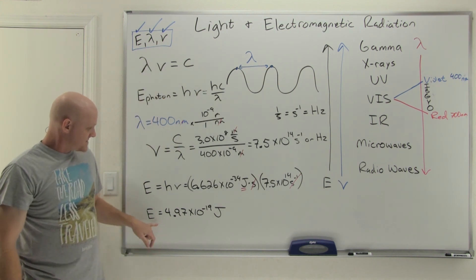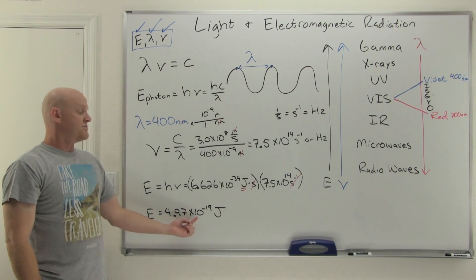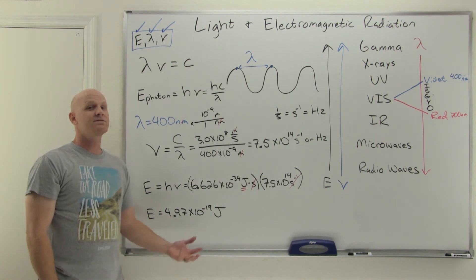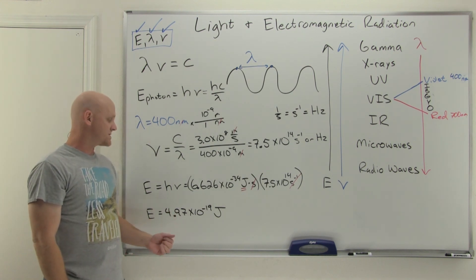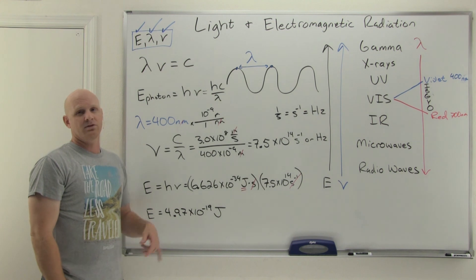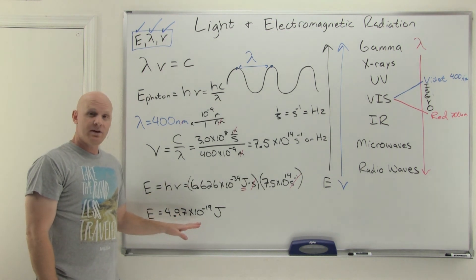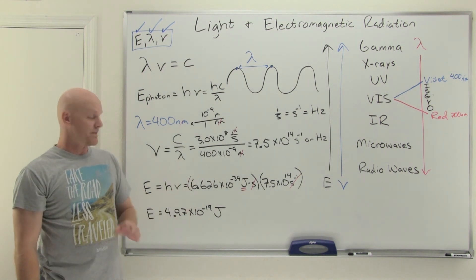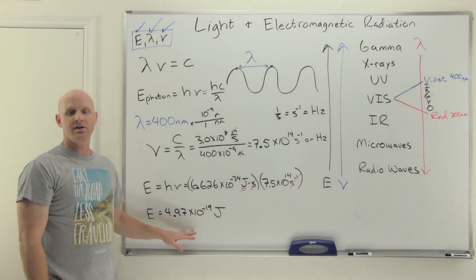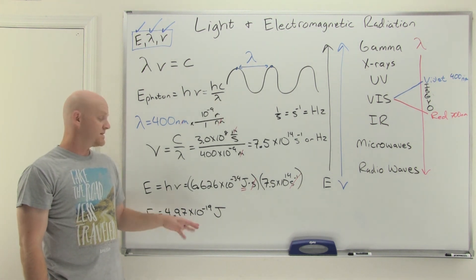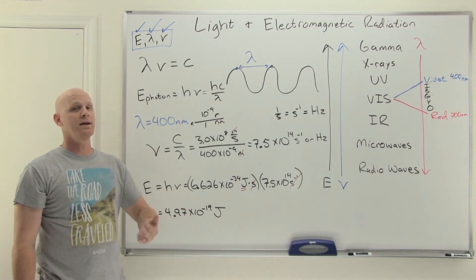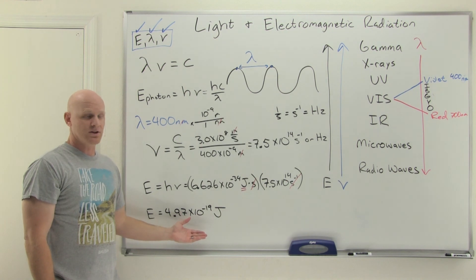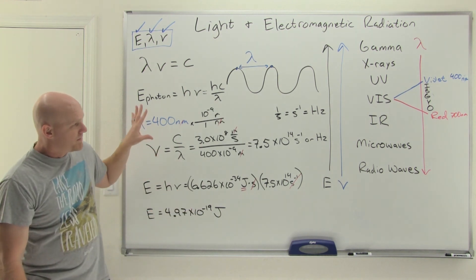This is the energy of a violet photon — a very, very tiny number, a very small amount of energy. For you and I it doesn't look like much, but for an electron this would actually be a fairly significant amount of energy. These are the calculations you're on the hook for, so definitely take some practice and do a handful of these.